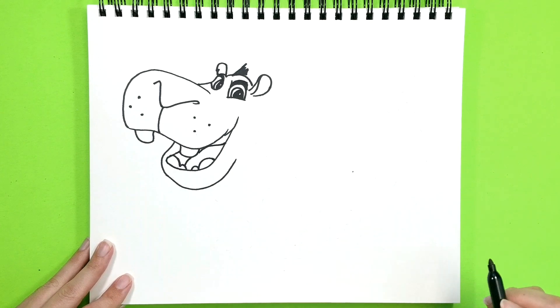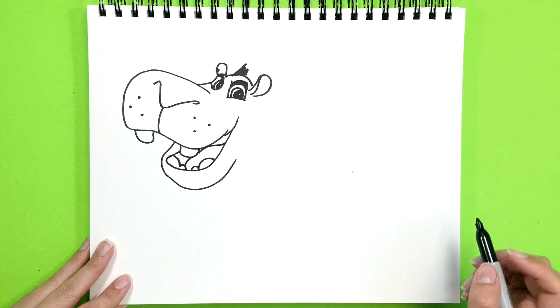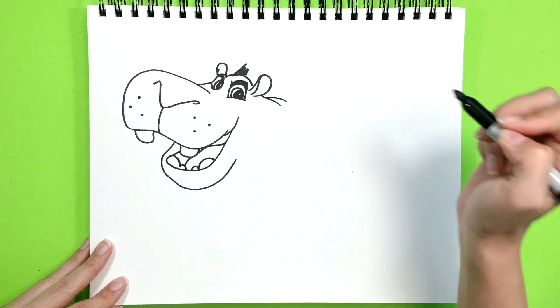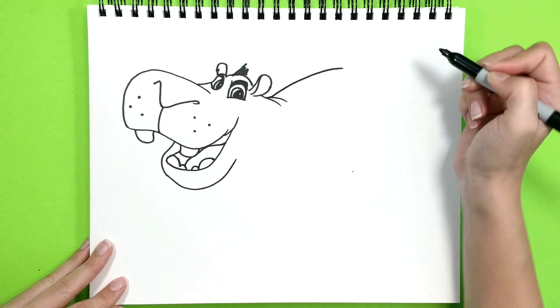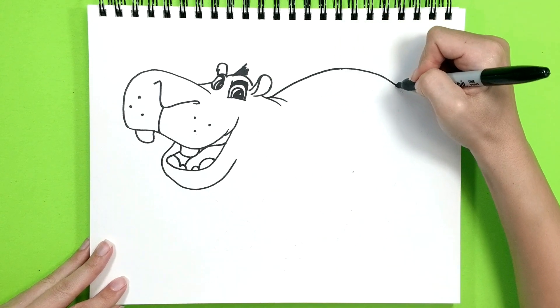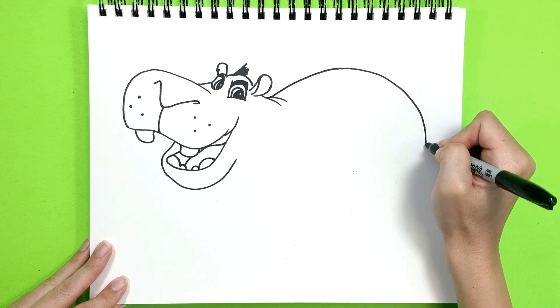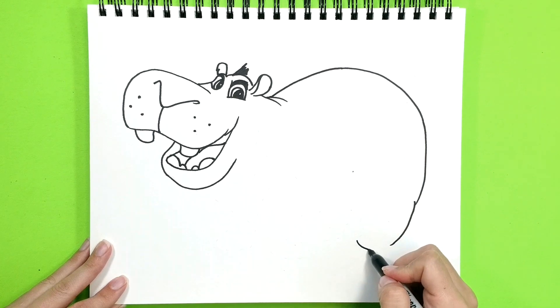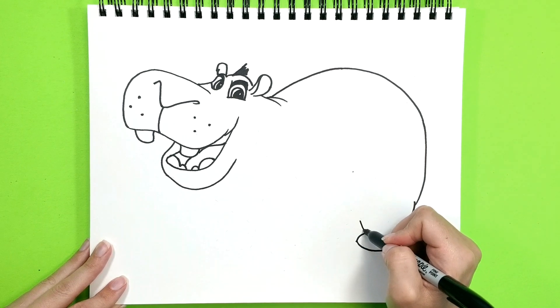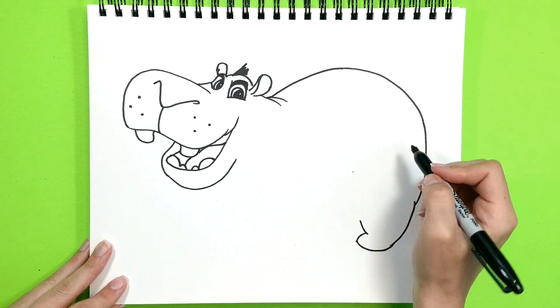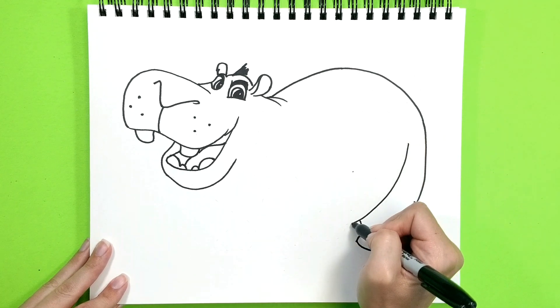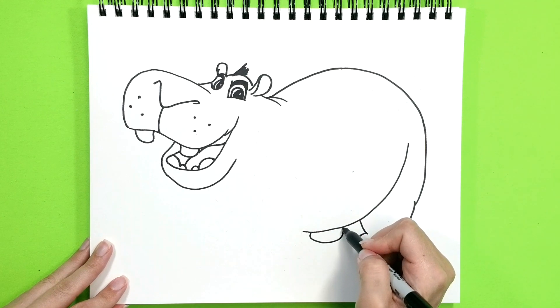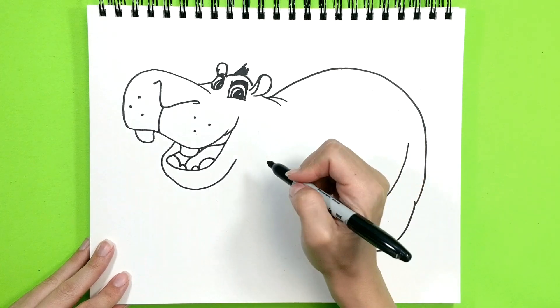Okay, now let's do his body. He was a pretty big hippo, so it's gonna be a big body right there. Let's start here and draw all the way up, curve, and we go all the way down. That's his foot. His big belly.